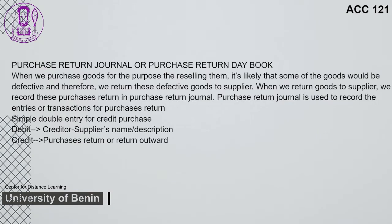When we purchase goods for the purpose of reselling them, it is likely that some of the goods would be defective and therefore we return these defective goods to the supplier. When we return goods to the supplier, we record these purchases returns in the Purchase Return Journal. For debit, it is the creditor or supplier's name or description. For credit, it is purchases return or return outward.